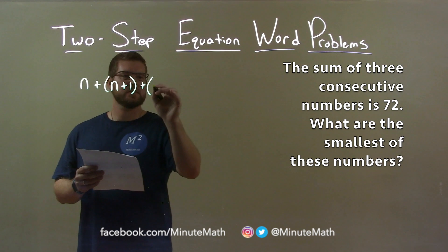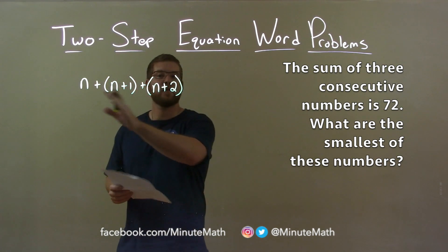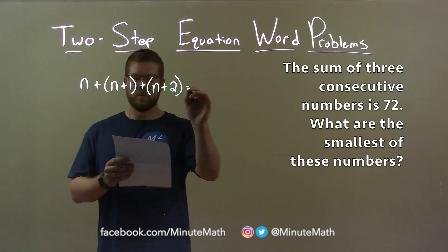And the third number is n plus 2, two more than the original number. They tell us the sum of these three numbers equals 72.